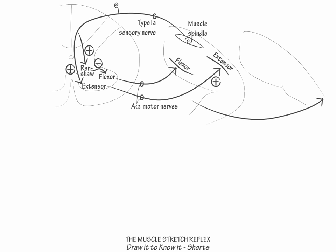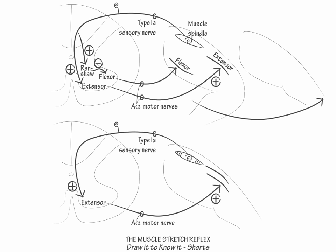Now let's show how the muscle stretch reflex is terminated. Redraw our same arrangement but exclude the flexor components and place the knee in extension. Then label a Golgi tendon organ where the quadriceps tendon inserts into the patella.